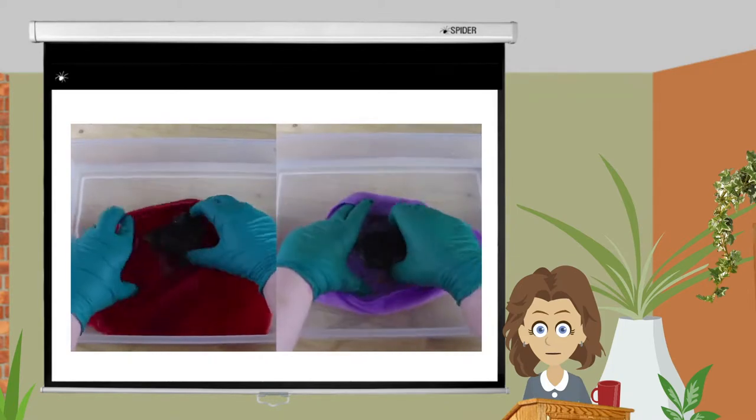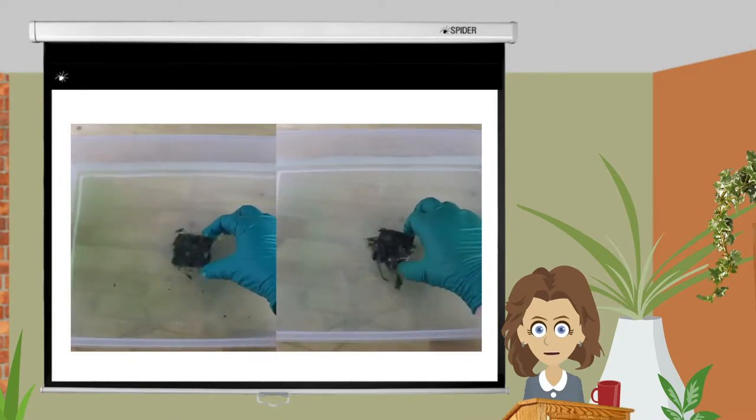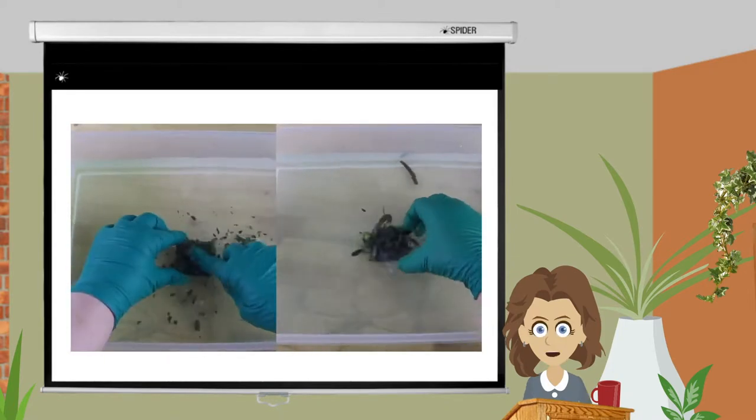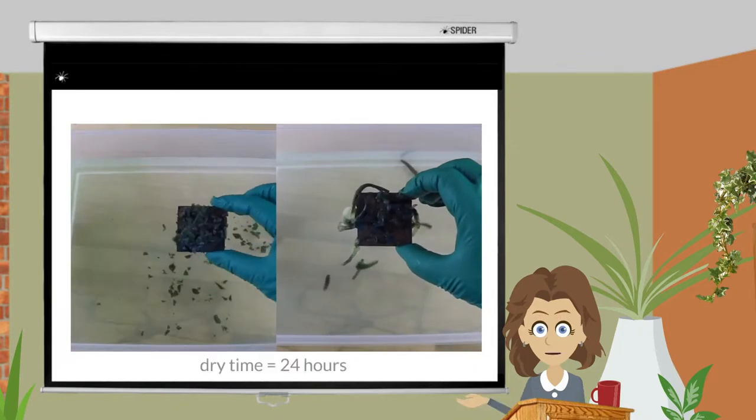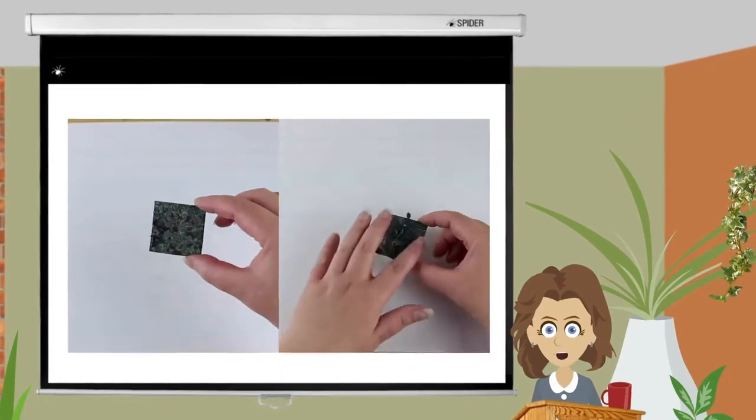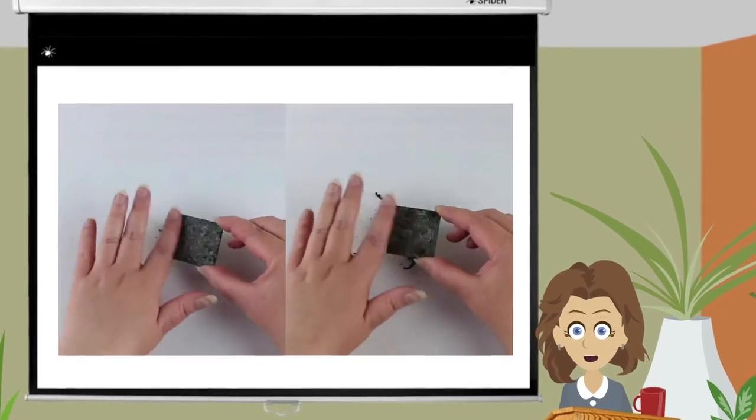But found the onions did not want to come off. Rather than pull harder and risk damage to the patina, I let the patina dry for 24 hours, then gently brushed the dried onion debris off.